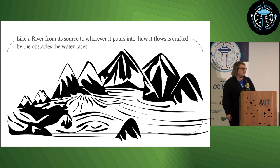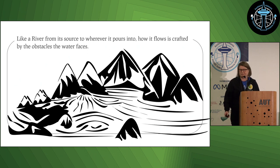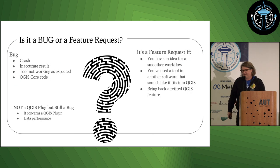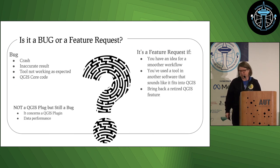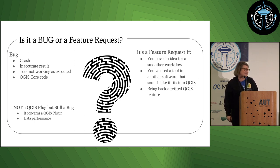If you don't report bugs, you might just have a catastrophic event — it may all crash and then you're stuck. So, is it a bug or is it a feature request? A bug is something that already exists in the software.